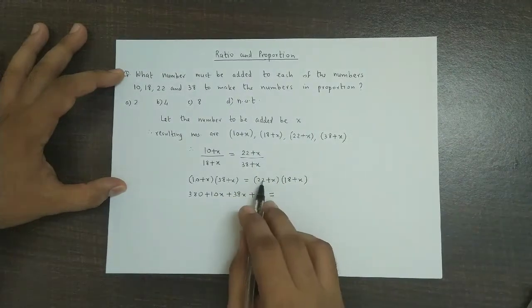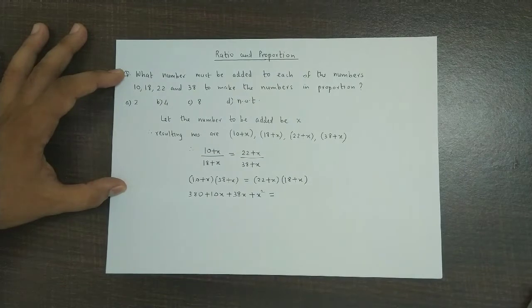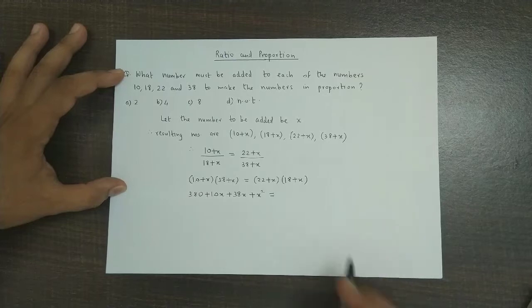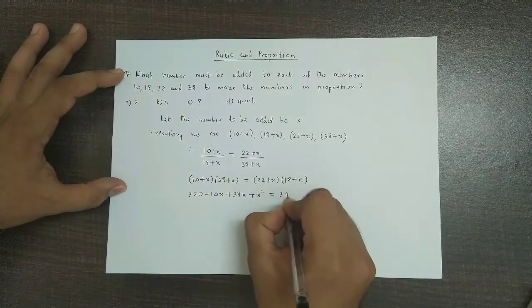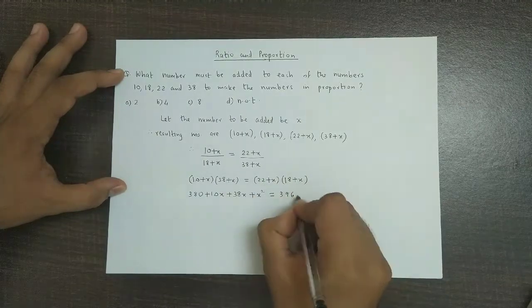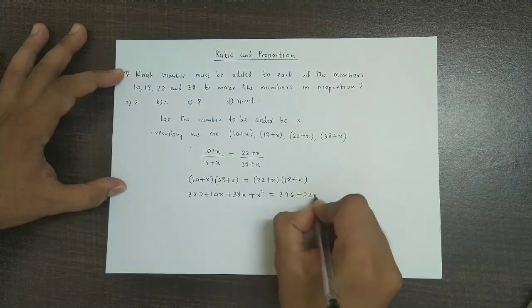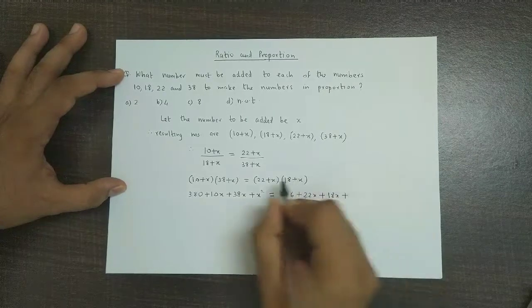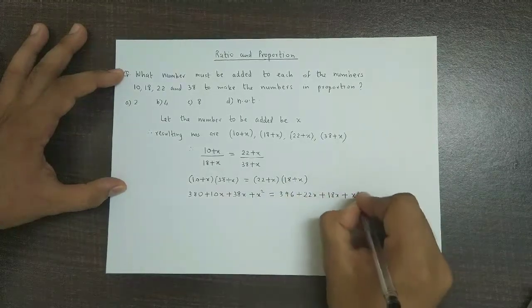And on the right hand side 22 into 18, so 22 times 18 that gives us 396, plus 22x plus x into 18 is 18x, plus x times x is x square.